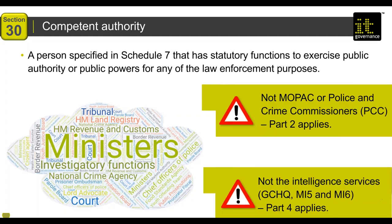Some examples: MOPAC (the Mayor's Office for Policing and Crime) and Police and Crime Commissioners are not listed at Schedule 7 because they are not processing information for a law enforcement purpose. It equally does not apply to GCHQ, MI5, and MI6 — because Part 4 applies to them. Part 4 uniquely relates to processing carried out by the intelligence services, and they are not competent authorities as defined by Schedule 7.